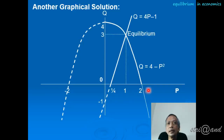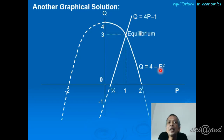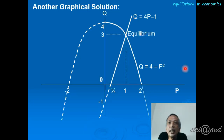The maximum point of the quadratic demand curve occurs at the midpoint between P = −2 and P = +2, which is P = 0. At P = 0, the quantity reaches its maximum of 4. In this example, the vertical intercept and the maximum point coincide at the same location on the graph.